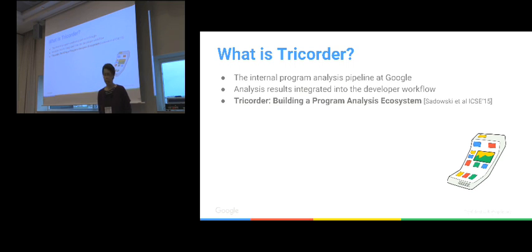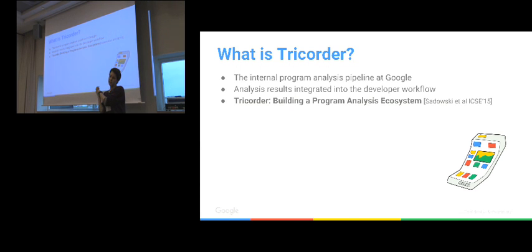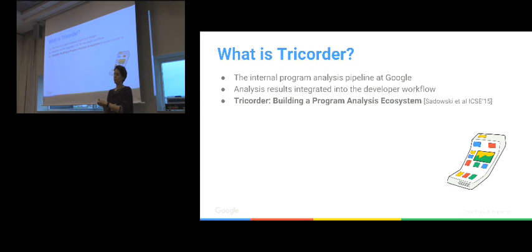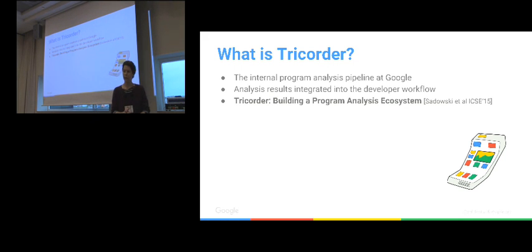Tricoder is the internal static analysis pipeline running at Google. You can read more about most things I'm going to say from a paper presented at ICSE last year. The goal of this pipeline is to produce analysis results in the appropriate places in the developer workflow, taking care of the integration. People who want to contribute to the system can do so — the system also has the goal of making it easy to contribute, so anyone internally at Google can say, 'I see this problem here, I want to help other people see it as well, and help them fix it.'